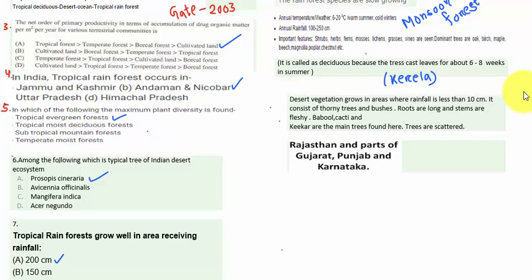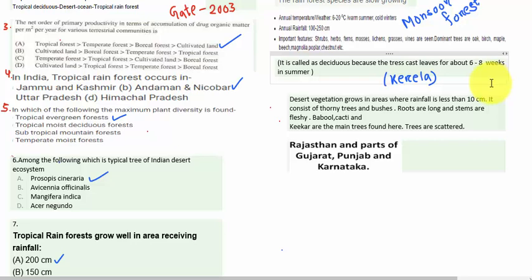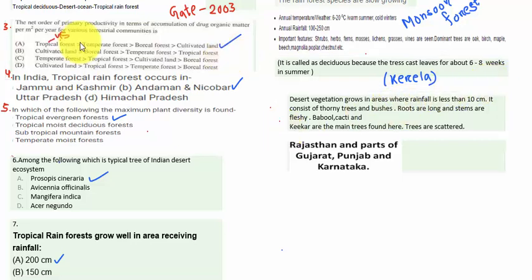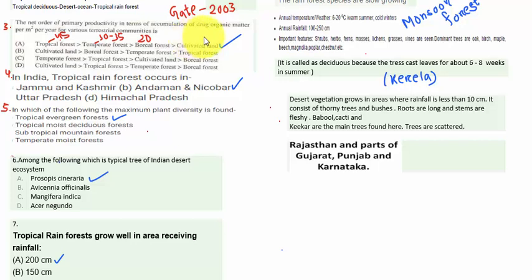The tropical forest generally accumulates 45 kg per meter square of organic matter. The temperate forest accumulates 30 to 35 kg per meter square. The boreal forest accumulates 20 kg per meter square of dry organic matter, and cultivated land accumulates 1 kg per meter square. So the highest is tropical — option A is correct.